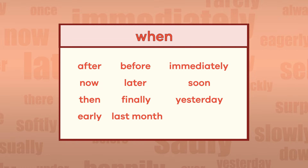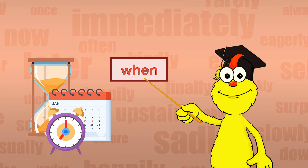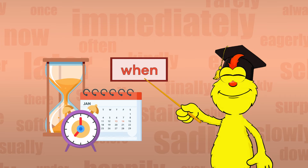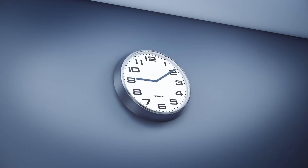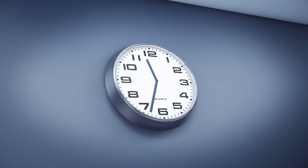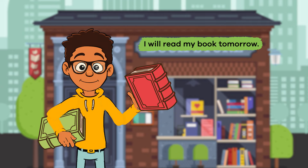Let's take a look at the different categories of adverbs and a few examples of each one, starting with 'when.' This category includes words like after, now, and later. As you can see, 'when' refers to a period of time and can be as specific as 2 p.m. or as vague as 'later.'